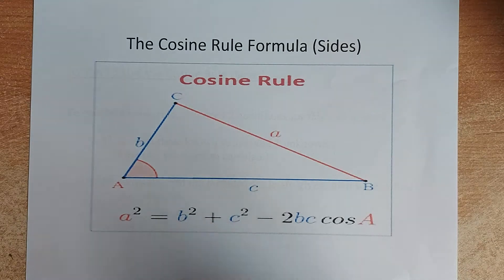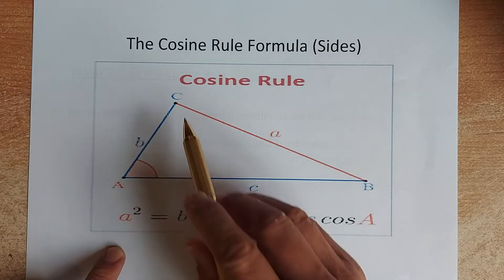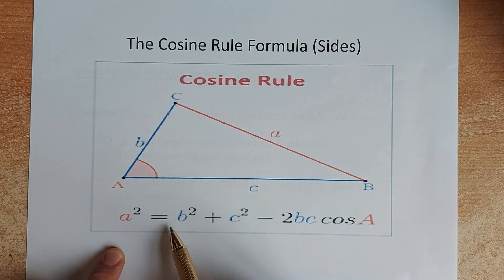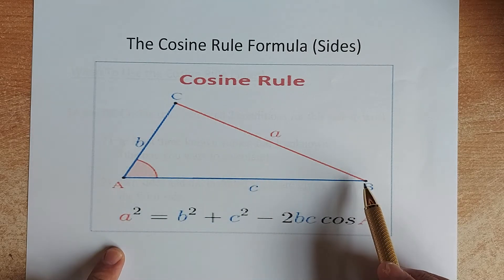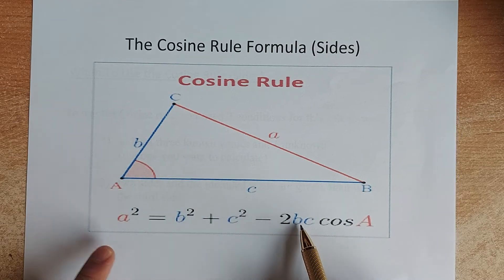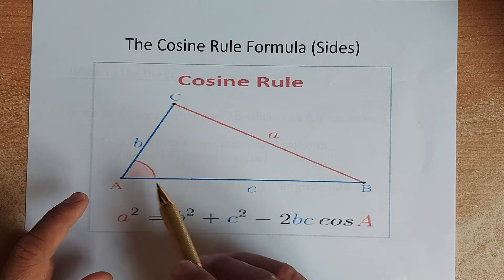The cosine rule has this unique formula. So a squared, the length there, the red line, is equal to b squared plus c squared minus 2 times b times c cosine A.